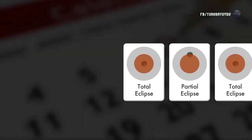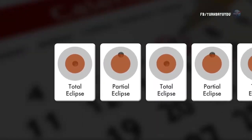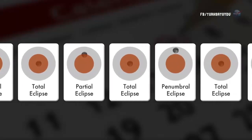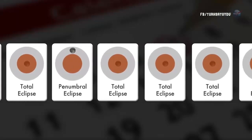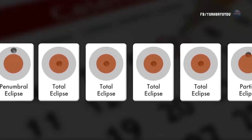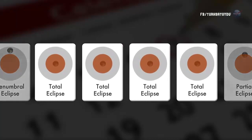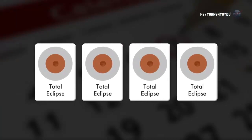Usually, lunar eclipses come in no particular order. A partial can be followed by a total, followed by a penumbral, and so on — anything goes. Occasionally, though, the sequence is more orderly. When four consecutive lunar eclipses are all total, the series is called a tetrad.